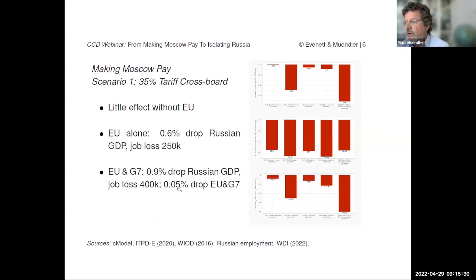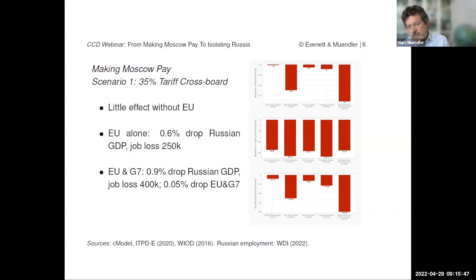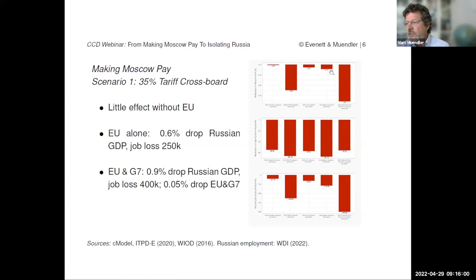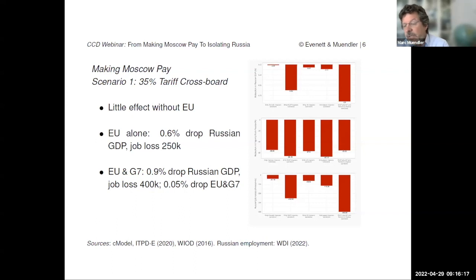With EU and G7 joining forces, we predict about a 1% cut of Russian GDP in the medium term once the economy adjusts, about 400,000 jobs lost that have to relocate to other industries within Russia, and a significant reduction in trade. The EU would only drop by 0.05% average GDP — these numbers suggest economies are extremely flexible. That raised a lot of questions among us about how flexible these economies really will be. Even if we make them less flexible, we still find relatively small numbers.